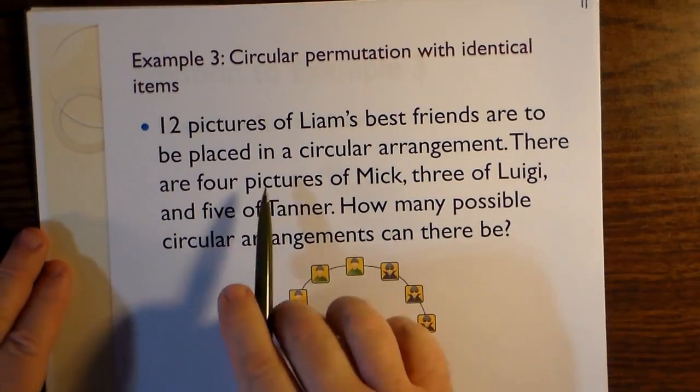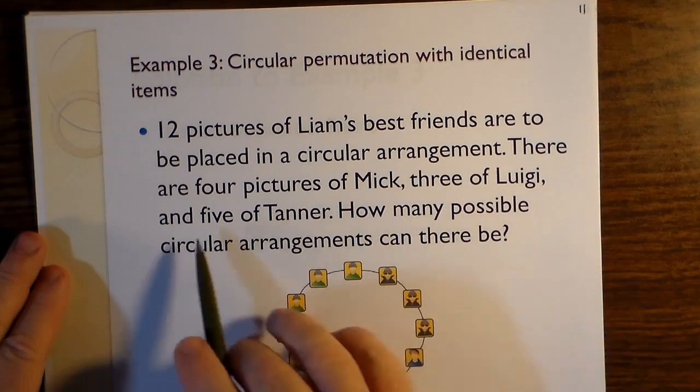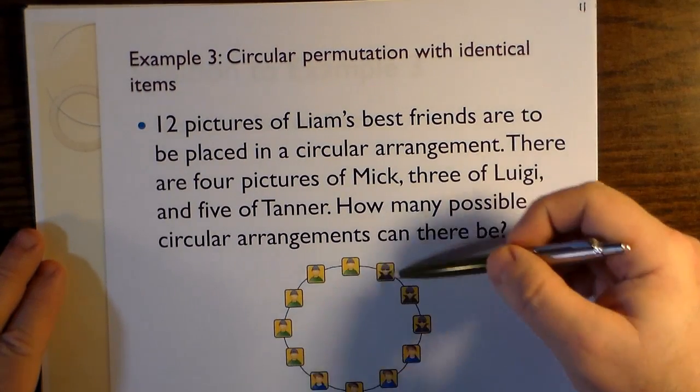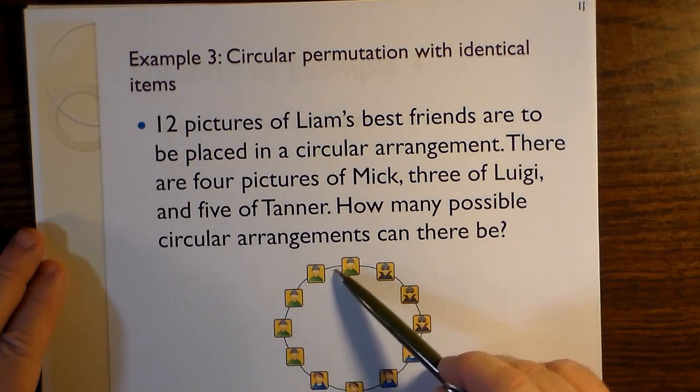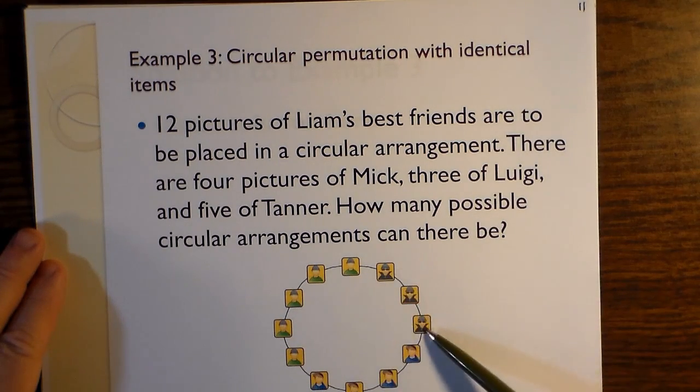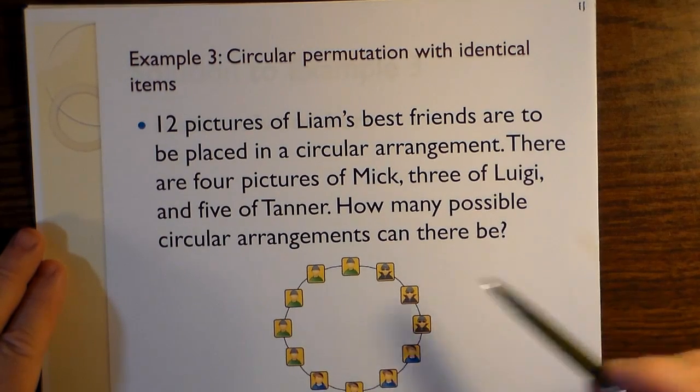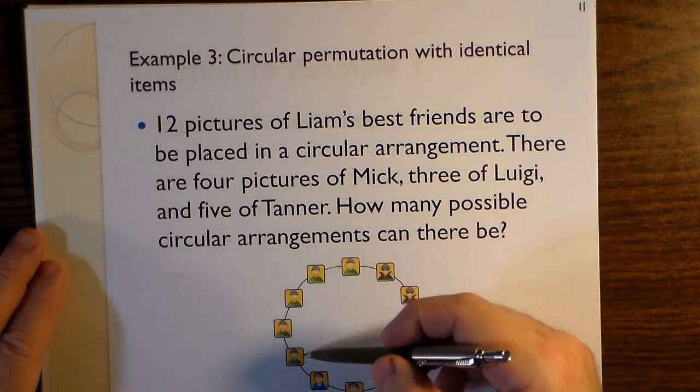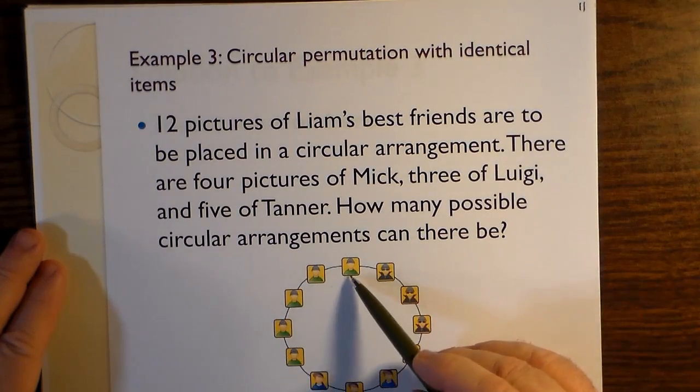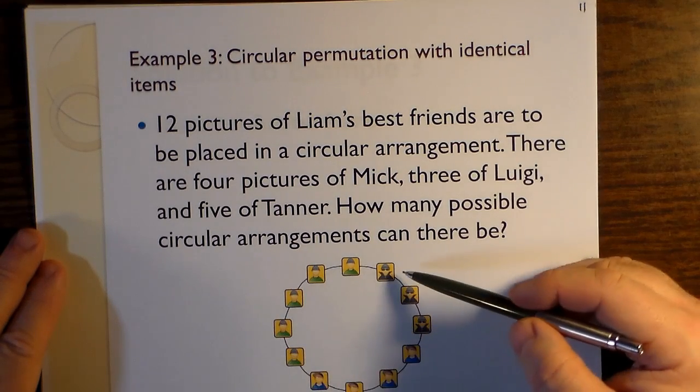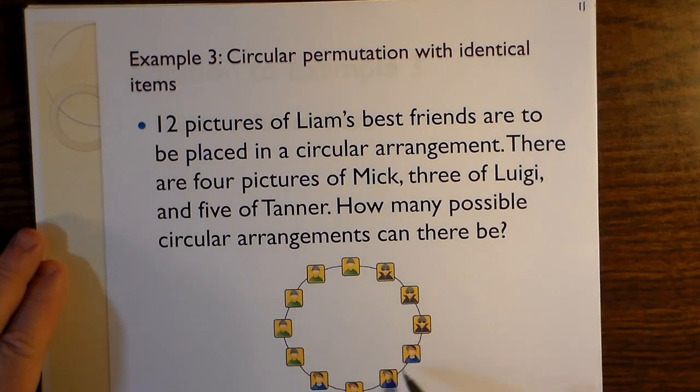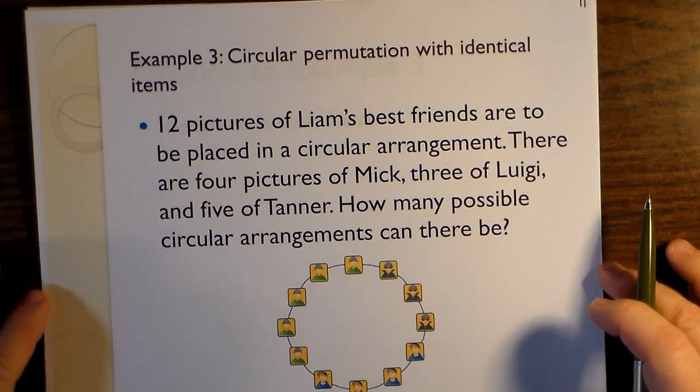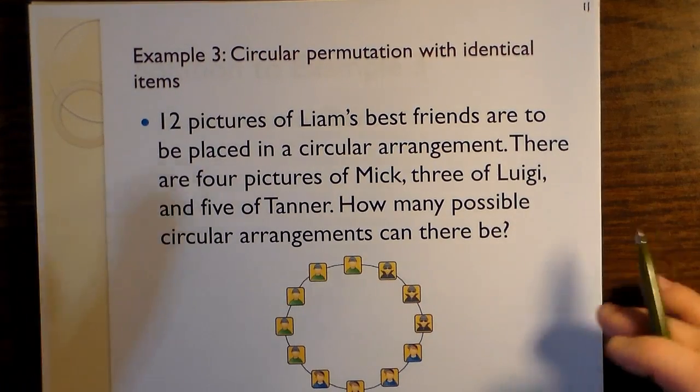Twelve pictures of Liam's best friends are to be placed in a circular arrangement. There are four pictures of Mick, three of Luigi, and five of Tanner. How many possible circular arrangements can there be? So here one imagines the five pictures of Tanner, the three of Luigi, and the four pictures of Mick. Now, as you can see in this depiction, they're identical with respect to each other. But now we treat the photos of the individual people as identical. So we have five identical pictures of Tanner, and three identical pictures of Luigi, and four identical pictures of Mick.